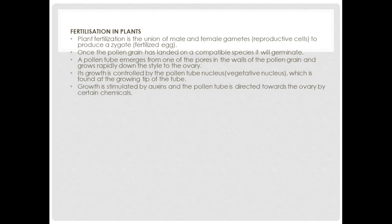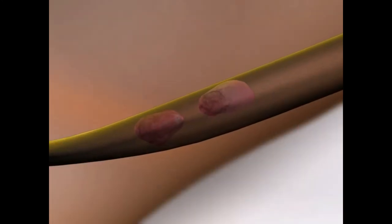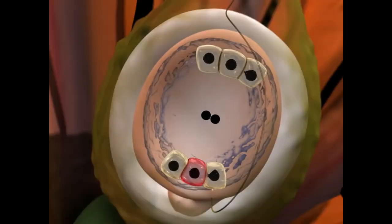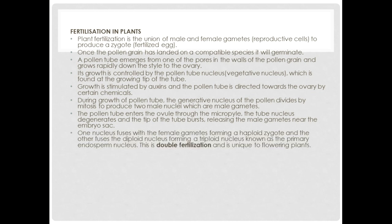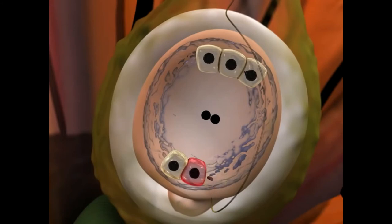Growth is stimulated by auxins and the pollen tube is directed towards the ovary by certain chemicals. During growth of the pollen tube, the generative nucleus of the pollen divides by mitosis to produce two male nuclei, which are the male gametes. The pollen tube enters the ovule through the micropyle. The tube nucleus degenerates and the tip of the tube bursts, releasing the male gametes near the embryo cell. One nucleus fuses with the female gamete forming a diploid zygote, and the other fuses with the diploid nucleus forming a triploid nucleus known as the primary endosperm nucleus. This is called double fertilization and is unique to angiosperms.